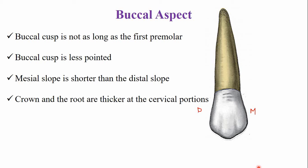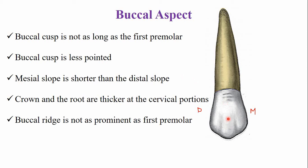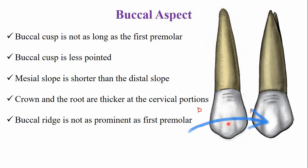In the maxillary second premolar, the crown and the root are thicker at the cervical portion compared to anterior teeth like the first premolar and canine. The buccal ridge is present, along with two faint developmental depressions — a mesial developmental depression and a distal developmental depression on the buccal side. These depressions are faint and the buccal ridge is not very prominent compared to the maxillary first premolar.